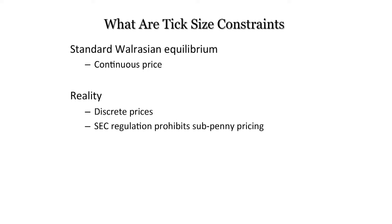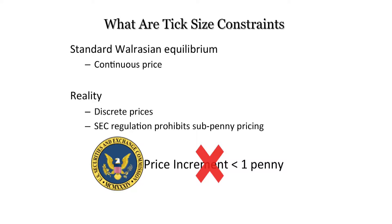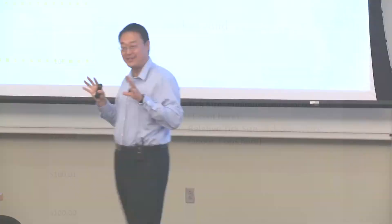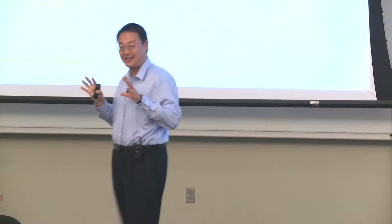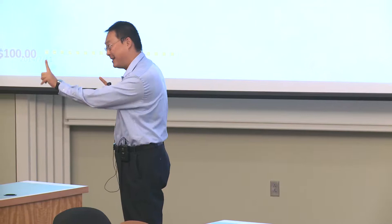That means if you trade on a public exchange, you cannot display an order with an increment less than one penny. Think about this as a limit order book — this is the pricing grid. Every quote should be in increments of at least one cent. The price between two minimum price increments is called tick size. In the US, any stock with a price of one dollar or above has a one-penny tick size. So the relative tick size is quite different: low-price stocks have a higher relative tick size, and high-price stocks have a lower relative tick size.